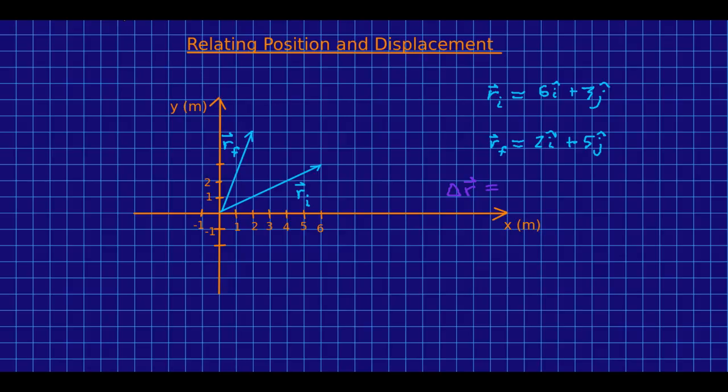We've already seen that it makes sense working graphically that the displacement is the final position minus the initial position. Let me just convince you that that also makes sense working algebraically. So first, I'm going to draw in the displacement vector. We know it points from the initial location to the final location.